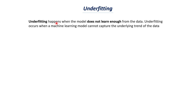First of all, let's try to understand what is meant by underfitting, starting with a formal definition. Underfitting occurs when a machine learning model cannot capture the underlying trend of the data. The training that the model has on the dataset is not enough, so it cannot find the trends that are present in a particular dataset. This is the definition of underfitting.